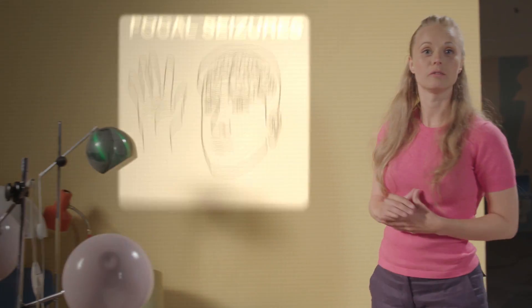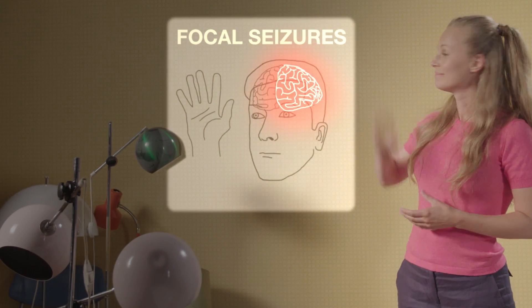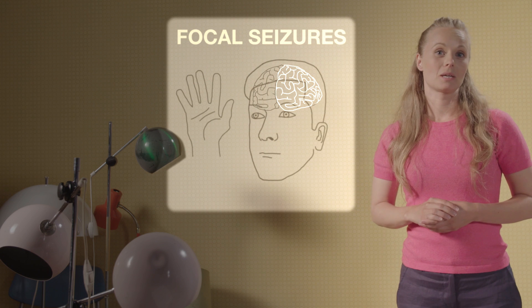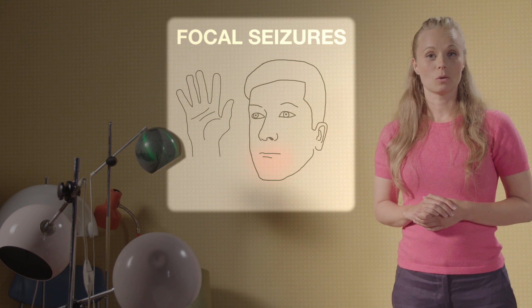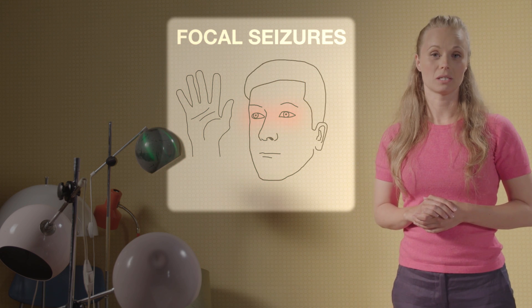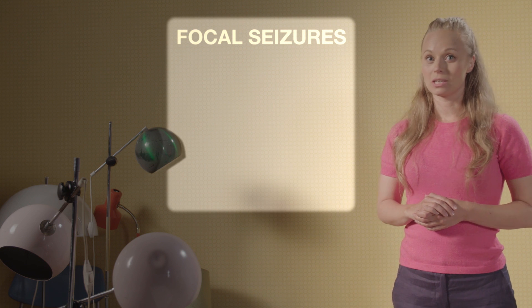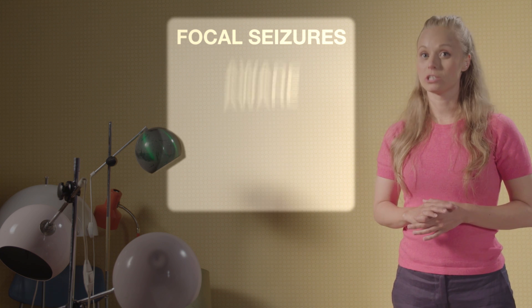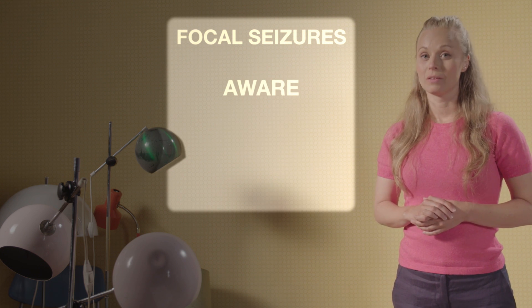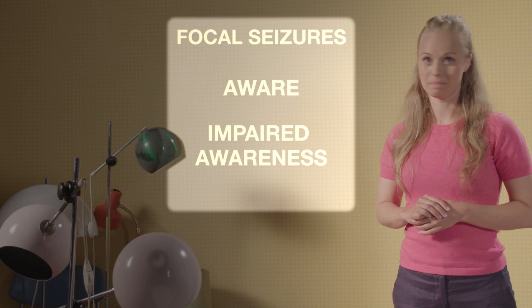Focal seizures start in one side of the brain. Symptoms can be a twitching hand, a strange smell, taste, or visual disturbances. Focal seizures can happen while fully conscious or partially conscious. The latter typically leads to no memory of the event.